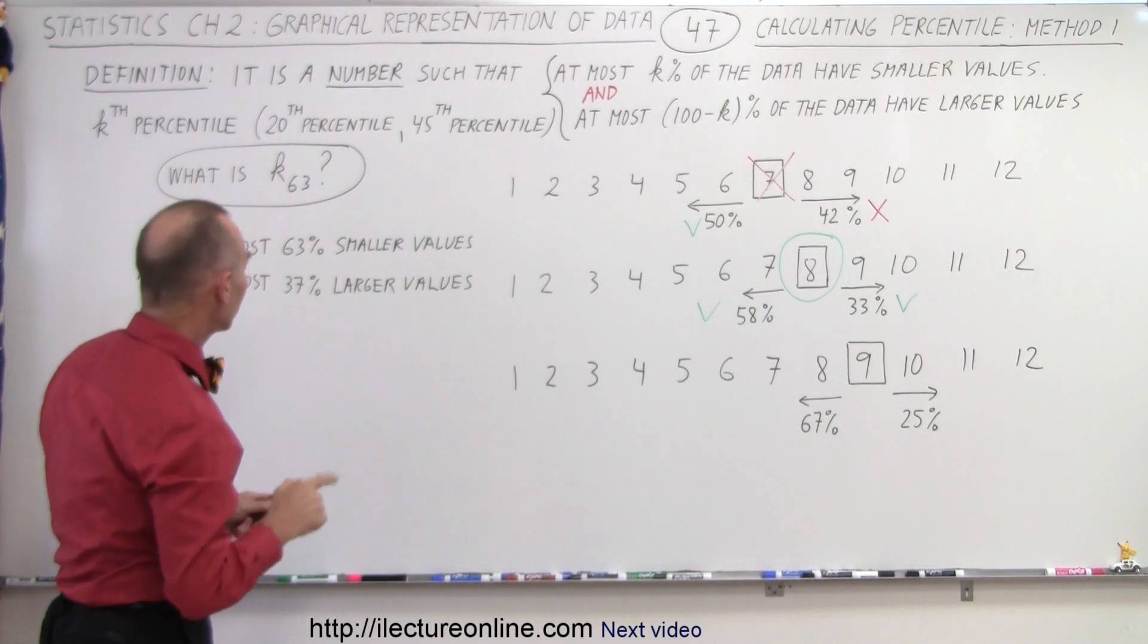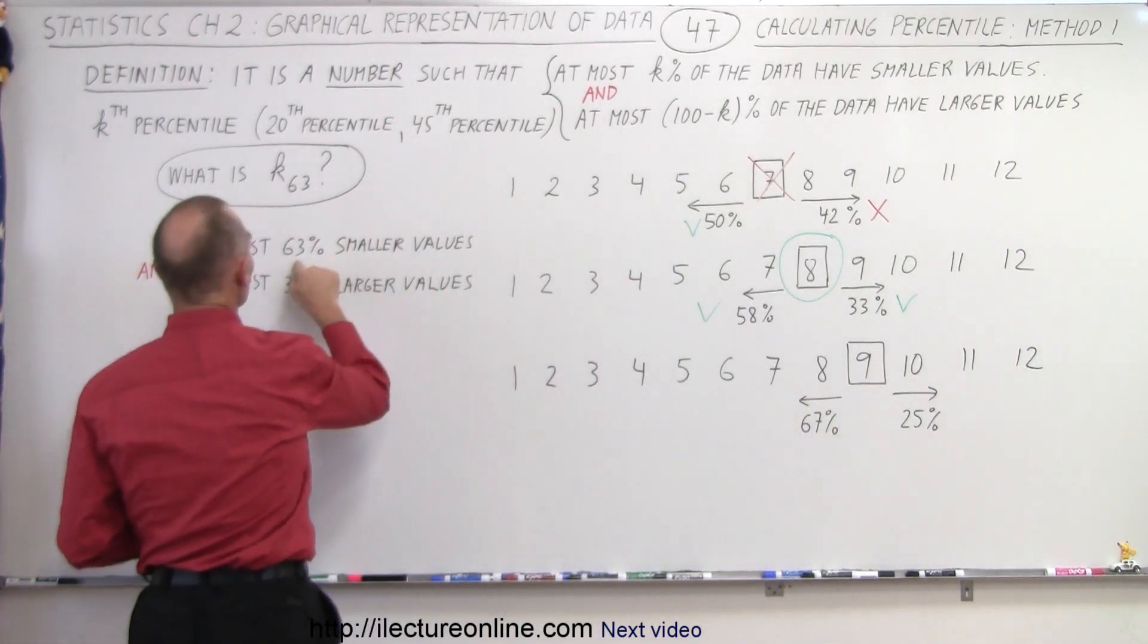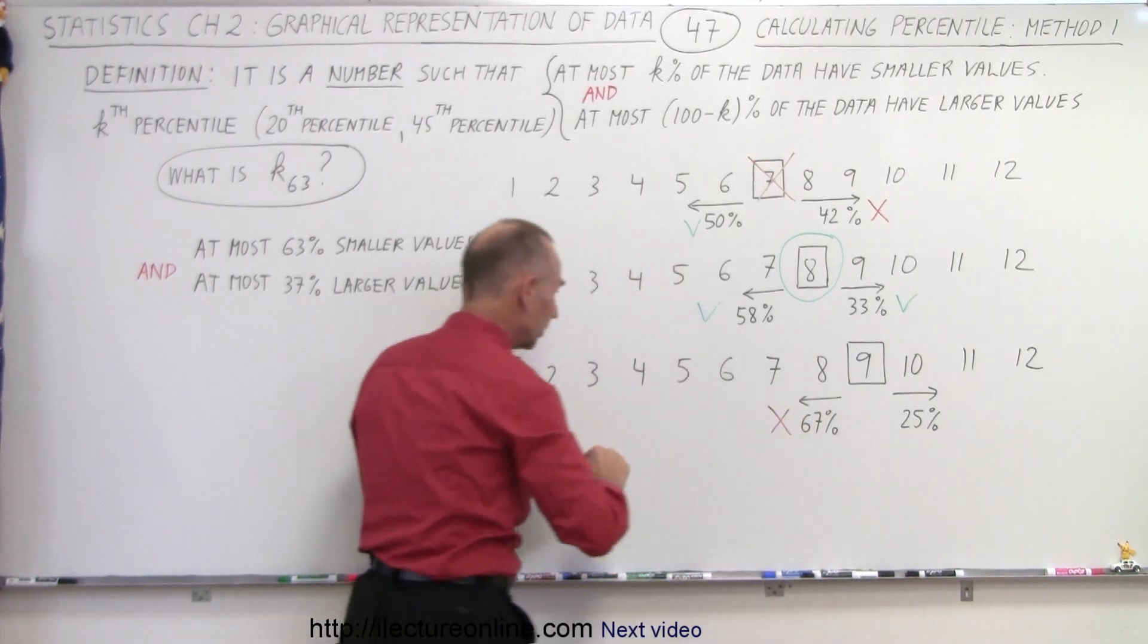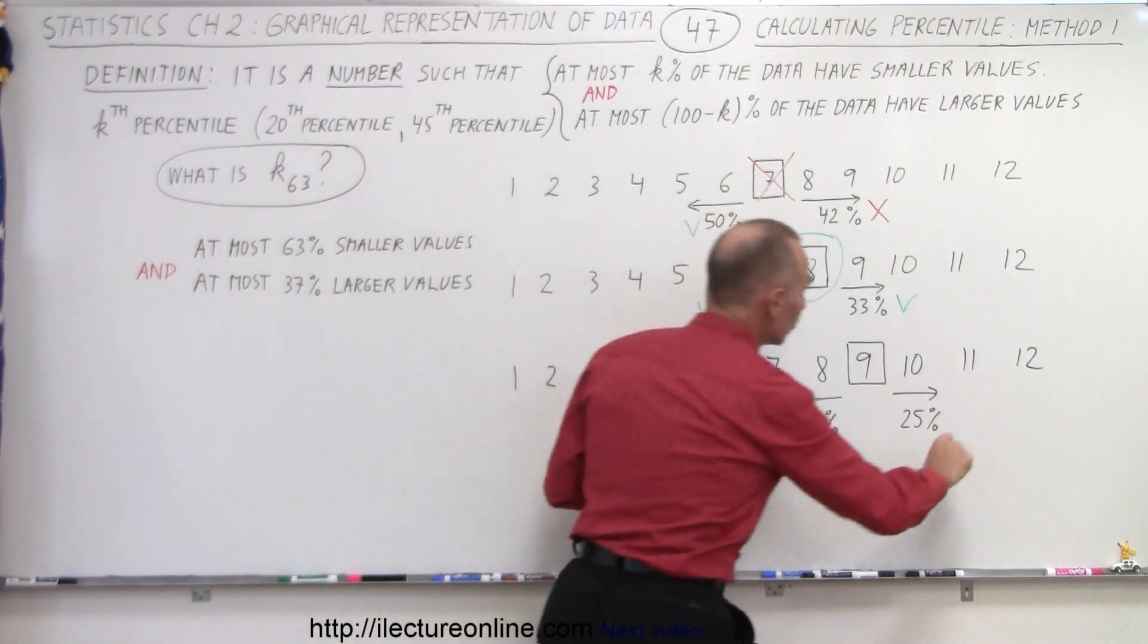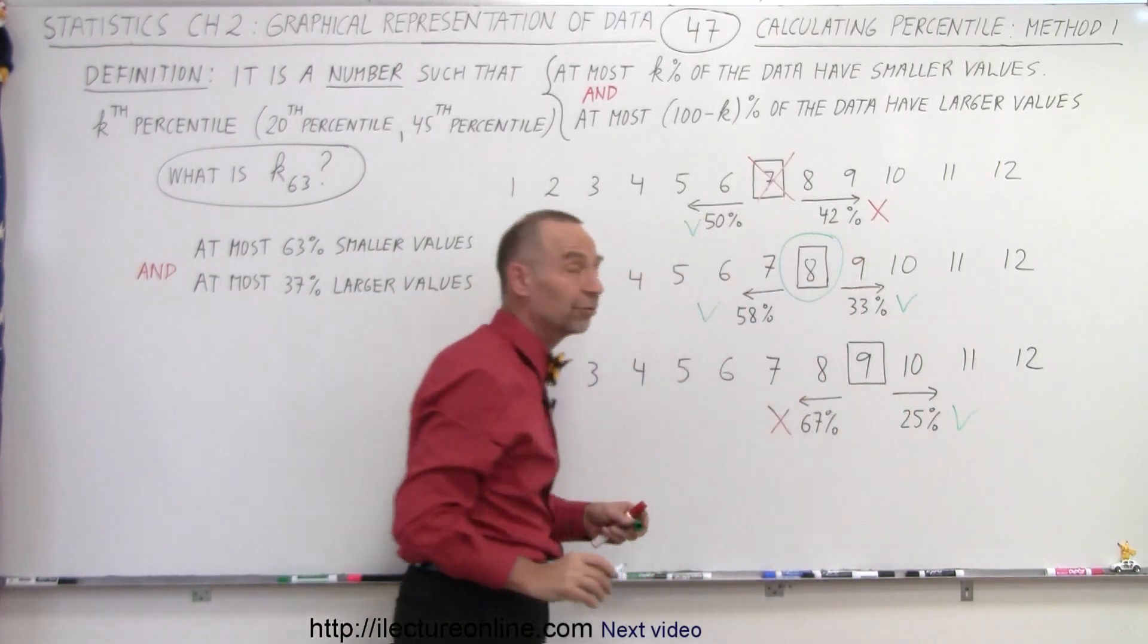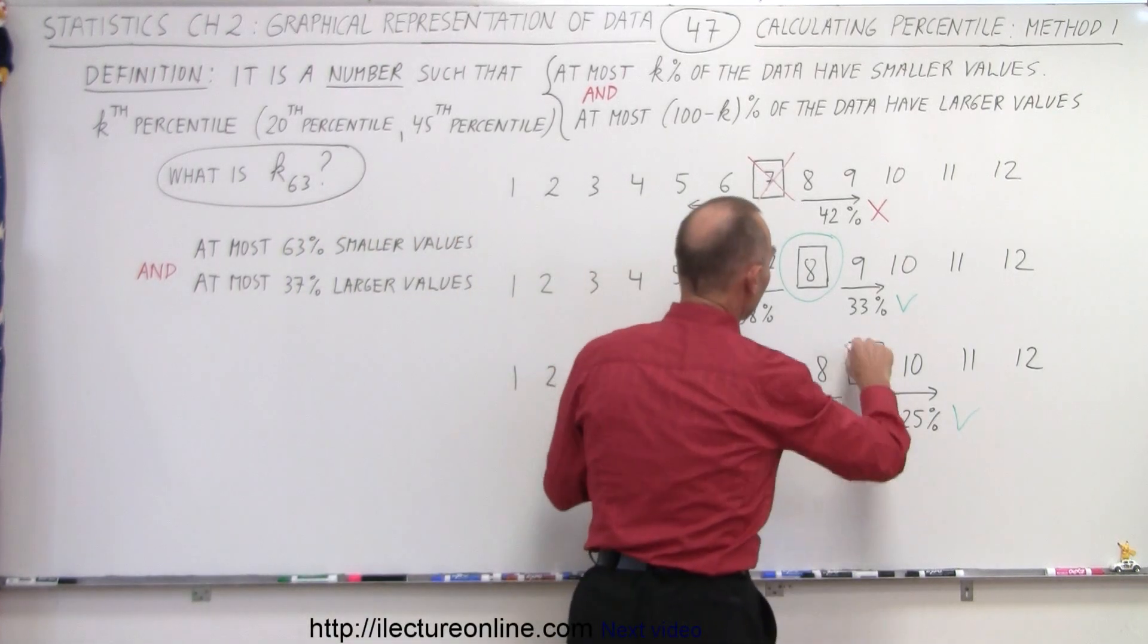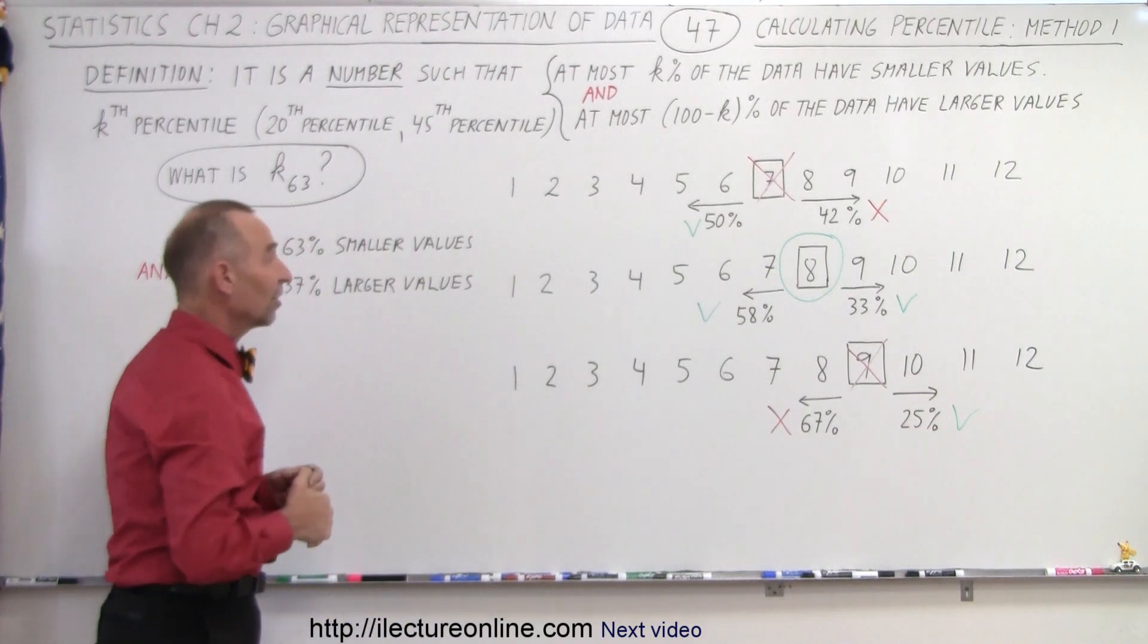Going on to the next one, notice that 67% have smaller values, which is more than 63%. So that does not meet the condition required. And 25% have larger values, which does meet the condition. It does get a green check mark, but that's only one out of two. So it doesn't meet the condition. That means this is not a good representation of the 63rd percentile.